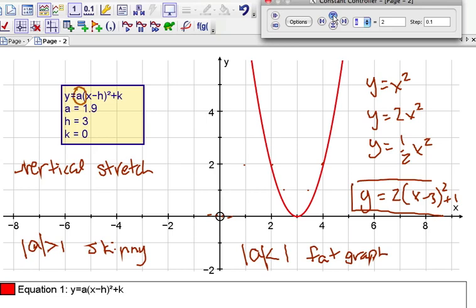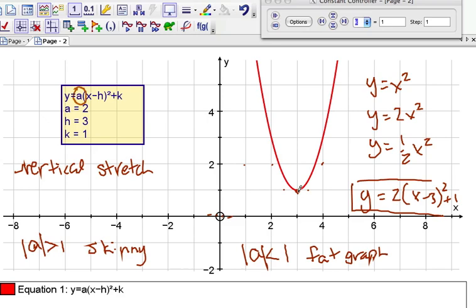And then the last thing we have to do is we have to add the one. And that's going to be a vertical shift up one. Vertical shift. And so here's my vertex is still three comma one. Same as before. The vertex hasn't changed, but it's a skinnier graph now than it was.